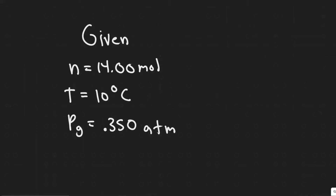In this problem we're told: if 14 moles of helium gas is at 10 degrees Celsius and a gauge pressure of 0.350 atm, calculate A, the volume of the helium gas under these conditions, and B, the temperature if the gas is compressed to precisely half the volume at a gauge pressure of 1 atmosphere.